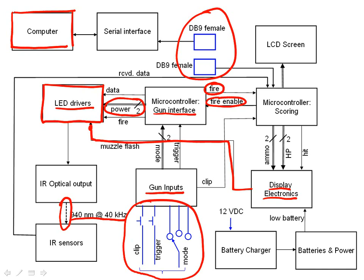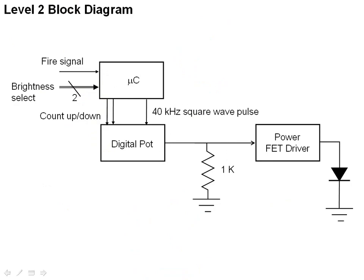Let's move on to a level two block diagram. As an example, we'll take a look at the LED driver circuit and see how that's represented at the next level of detail — going inside that block and drawing another block diagram of how it works. At the level two block diagram, we're now getting almost down to the schematic level. We have a microcontroller, a digital potentiometer, and we even show discrete components: a resistor as part of a voltage divider, a light emitting diode, and a power FET driver. This does not yet give enough information to actually make a schematic, but we're getting very close.